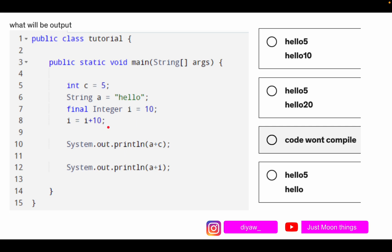The options that we have: a plus c, that means hello is a string and it will be concatenated since it's a string at the beginning, and the 5 will be added, it will be hello5. Then we have a plus i, that means the string hello plus i equals to 10, hello10.